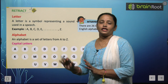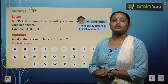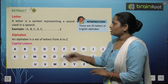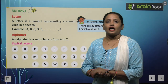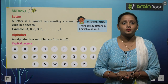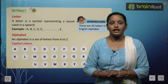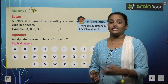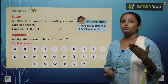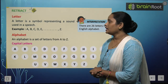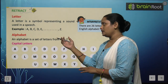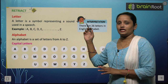The first thing we will learn is letter. So do you know what is a letter? Letter kia hota hai? So let's read it: a letter is a symbol representing a sound used in a speech. Letter kia hai? Ek symbol hai, joh re-present kar raha hai, kissi bhi sound ke baare mein batata hai, joh bhi hum apni speech mein bolte hain. Examples are a, b, c, d, e and till z.